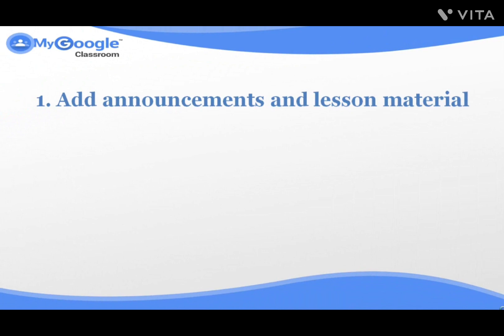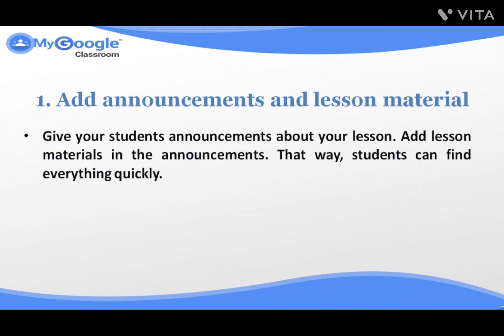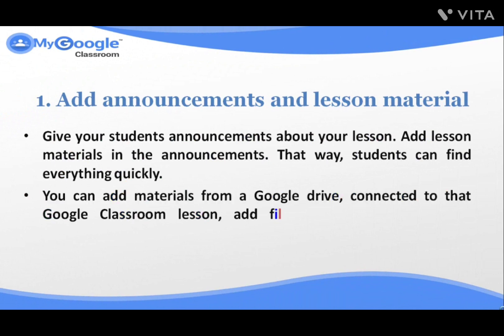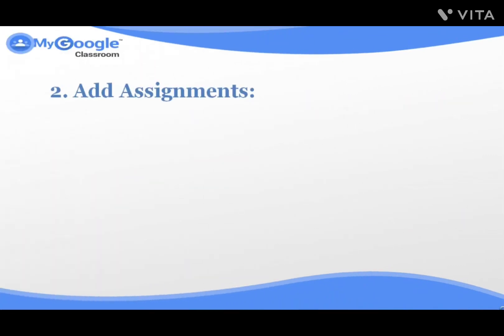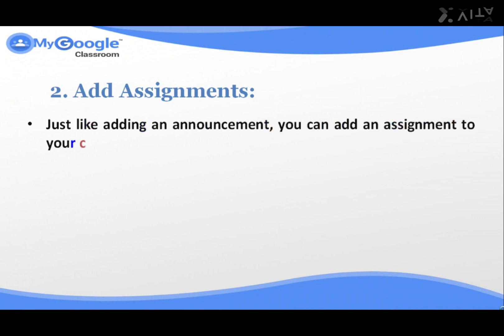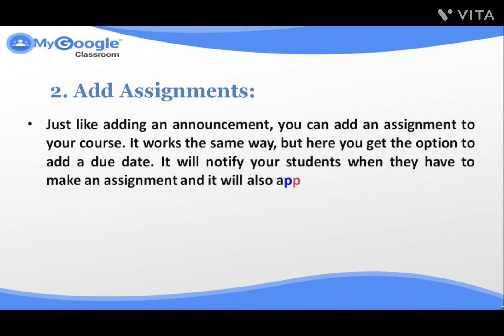Here's a list of things you can do with Google Classroom. Number one: Add Announcements and Lesson Material. Give your students announcements about your lesson and add lesson material in the announcements — that way, students can find everything quickly. You can add material from a Google Drive connected to that lesson, add files and images from your computer, add a YouTube video, or add any other link you want your students to visit. Number two: Add Assignments. Just like adding an announcement, you can add an assignment to your course. It works the same way, but here you get the option to add a due date — it will notify your students when they have to make an assignment, and it will also appear in their calendar.